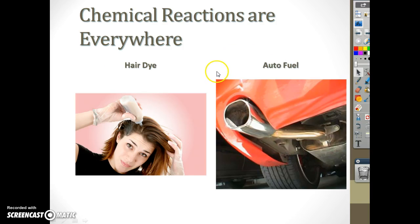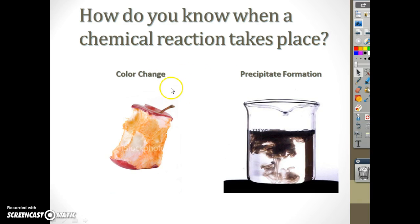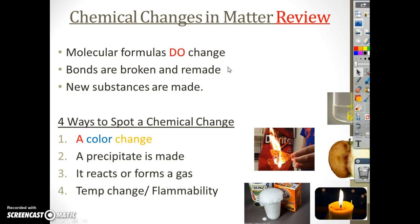Here are some other examples: hair dye - you can get it back but only through another chemical change. Fuel in your car - chemical changes are occurring. A color change - not always a chemical change. In this case the apple got all gross, that is a chemical change. But let's say you made some Kool-Aid, not a chemical change.